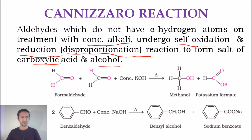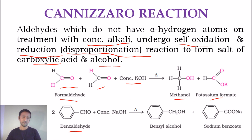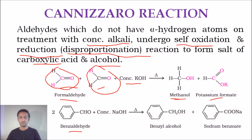We get two compounds: one is the salt of carboxylic acid and the other is alcohol. Two examples are taken here — first with formaldehyde and second with benzaldehyde. The Cannizzaro reaction requires two moles of aldehyde with no alpha hydrogen atoms. Two moles of formaldehyde reacting with concentrated potassium hydroxide gives methanol as the reduced product and potassium formate as the oxidized product — a disproportionation reaction.